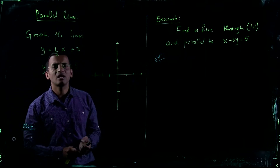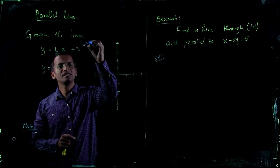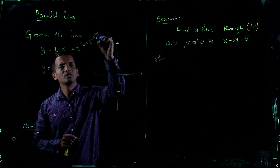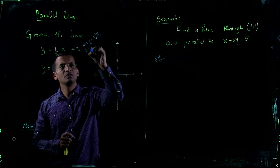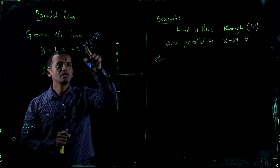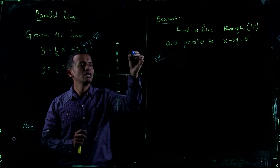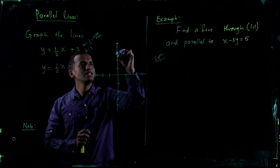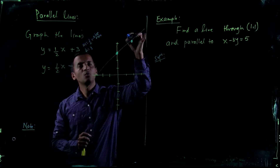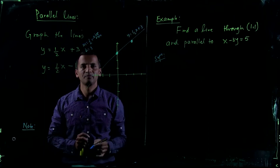Let's see how their graphs differ from each other. The slope is one-half, that is rise over run, and b is 3. So you start from y-intercept 3, then rise 1 and run 2. That gives you the line y equals one-half x plus 3.